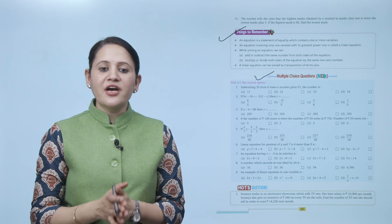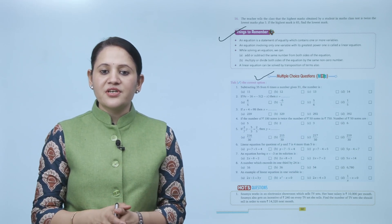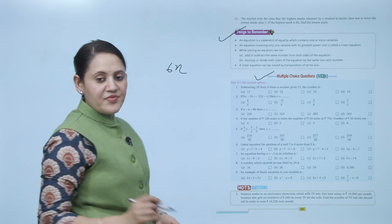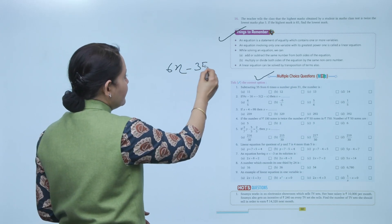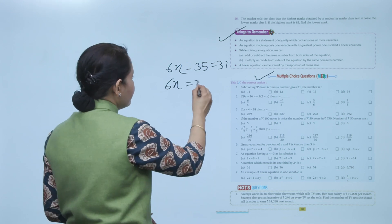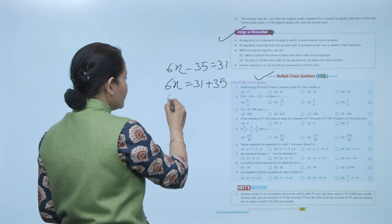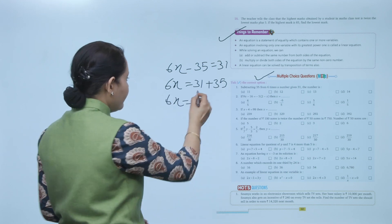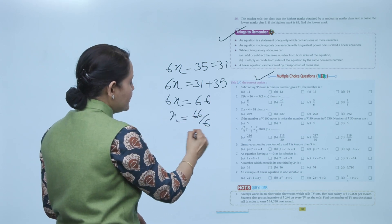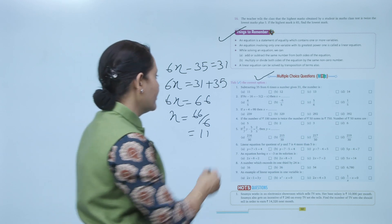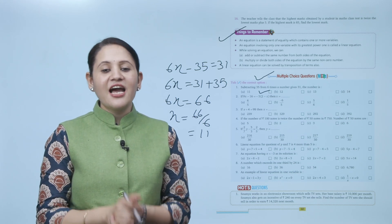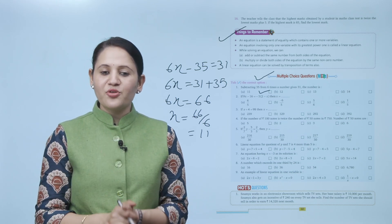Next are multiple choice questions. Subtracting 35 from 6 times a number gives 31; find the number. Let the number be x. 6 times the number is 6x; subtracting 35 gives 6x minus 35 equals 31. Transposing 35 to the other side: 6x equals 31 plus 35 equals 66, so x equals 66 upon 6, which means x equals 11. So option A is the correct answer. Practice all the questions of this chapter. Here we end the chapter — I hope you understood it well. Practice now!